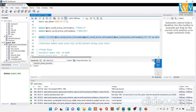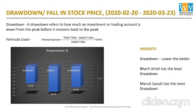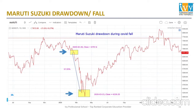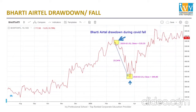We can see the drawdown results. Ultratech Cement's drawdown was 31.01%, Maruti Suzuki's was 37.55%, and Bharti Airtel's drawdown was 35.34%. The insight is: drawdown lower is better. Ultratech Cement had the least drawdown and Maruti Suzuki had the most drawdown during the specified period. I've also shown this in graphical/chart form using real-time charts for that timeframe — we can see Maruti Suzuki's drawdown, then Ultratech Cement's drawdown, and then Bharti Airtel's drawdown.